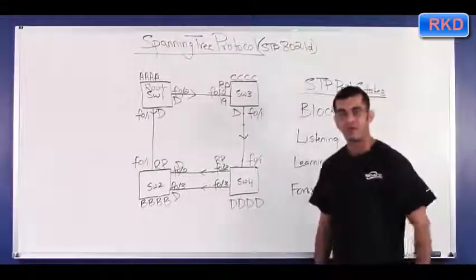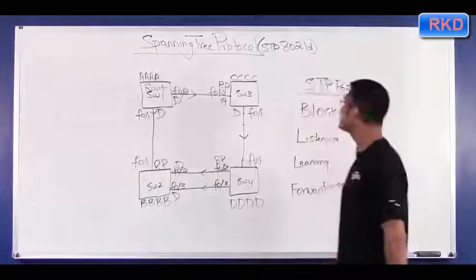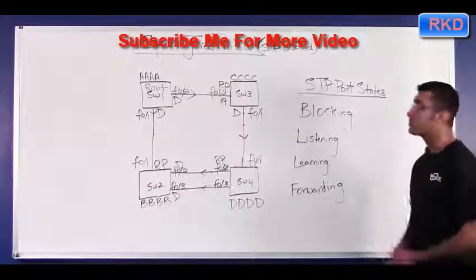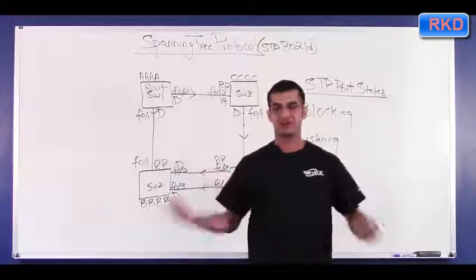When switches power up and as spanning tree is converging, initially all ports are put in blocking. In blocking, no data traffic is being forwarded. Of course, BPDUs are being sent because spanning tree is converging.